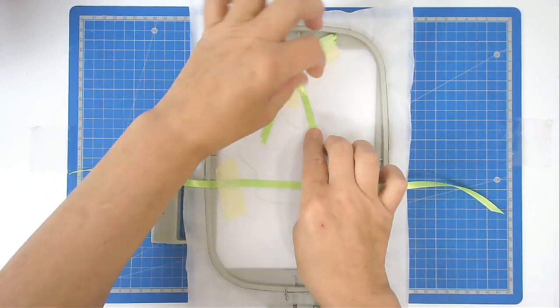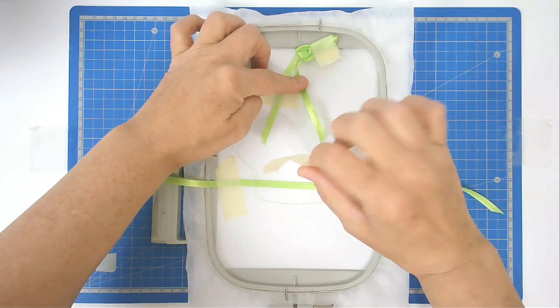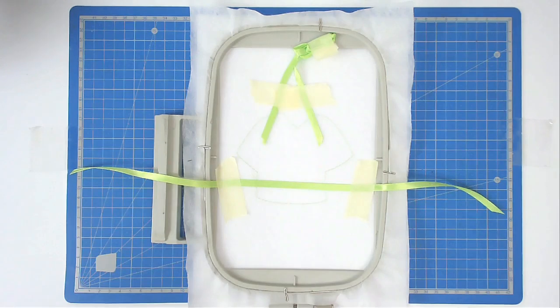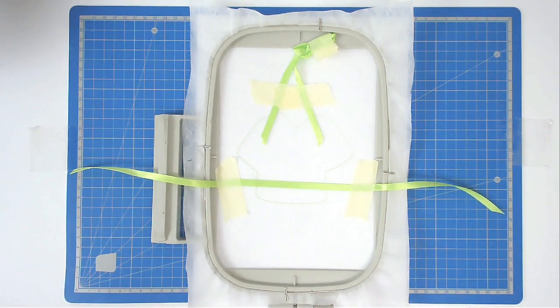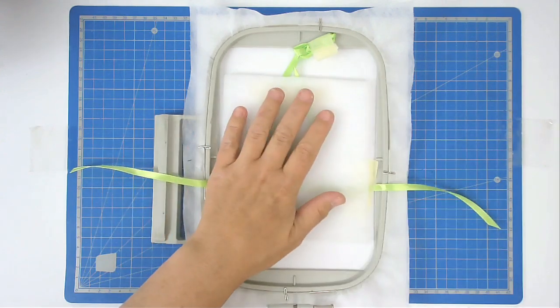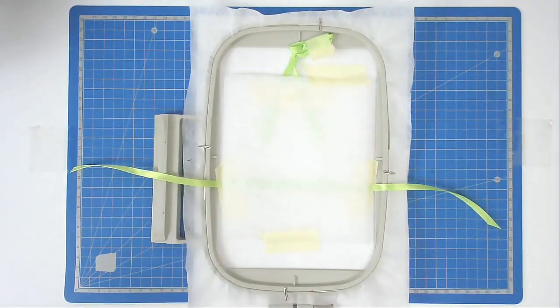Next, you're going to lay down your batting on top and tape it in place. You can now pop that back into your machine and stitch round number two, and that's going to secure everything in place.